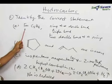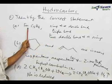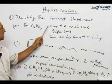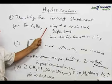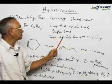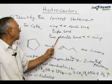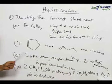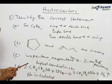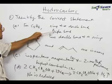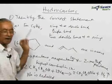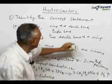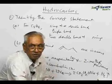The first statement is slightly written in abridged form. For the formula C₅H₈, the compound can have three possibilities: the compound can have a ring and a double bond, a triple bond, or two double bonds and no ring. There is a small correction — it is two double bonds and no ring, not ring.